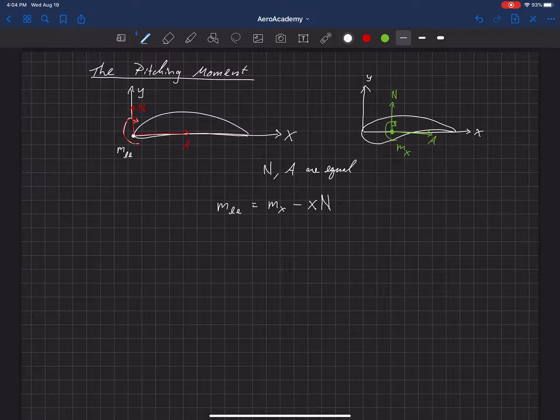So let's rewrite this equation in terms of the coefficients. So we would say the coefficient of moment at the leading edge is equal to the pitching moment coefficient at the X location minus, let's see, let's leave that X there for just a minute, and then we've got the normal coefficient. And we're talking about two-dimensional properties, so I'll put a little tilde above those.